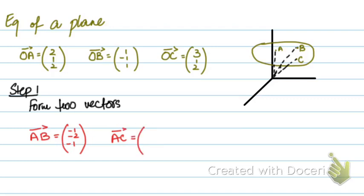AC will be OC minus OA, so (3-2, 1-1, 2-2), which is (1, 0, 0). So, I form 2 vectors.